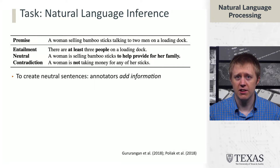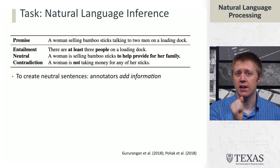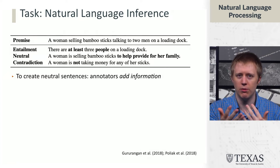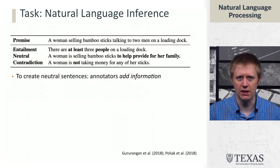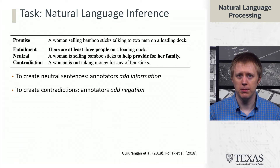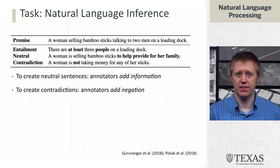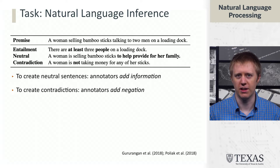For neutral statements, annotators would add information — take the scenario and add extra stuff that can't be verified, which won't contradict but won't be entailed either. For contradictions, they would negate something actually going on, such as 'a woman is not selling bamboo' or 'not taking money for her sticks.' The problem is that there are plenty of good statements that don't have negation, and there aren't many entailed things that do have negation.